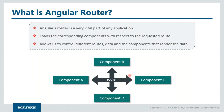As you can see in the image, we have four components A, B, C, D. The router will be responsible for all this navigation. In any Angular application, if you are clicking on an about page and your Angular application is able to render the about component in the specified area where it was programmed, that is because of the router.